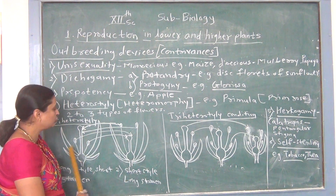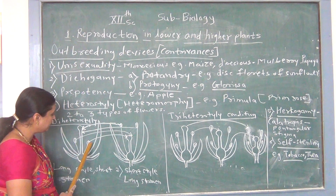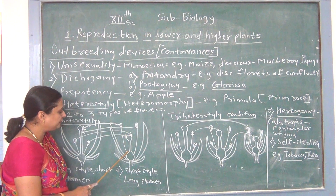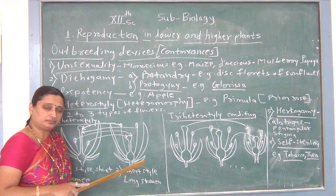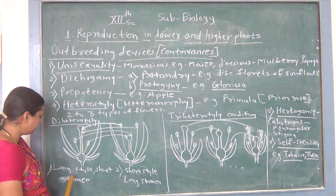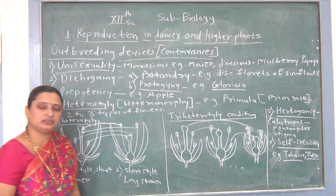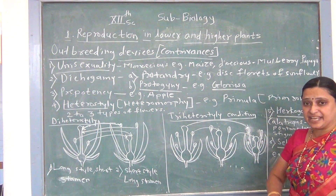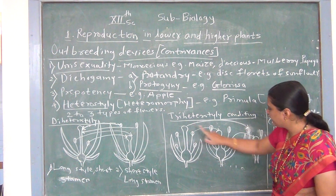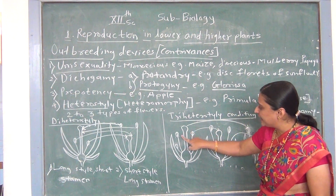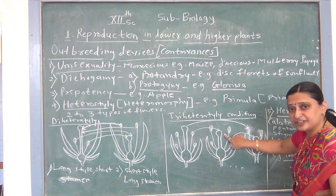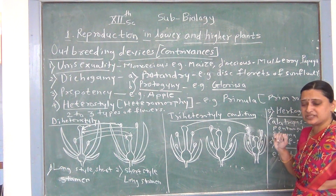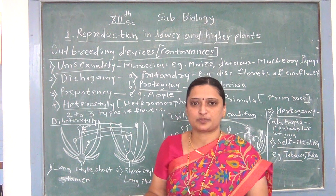In di-heterostyly, cross-pollination takes place because in the first flower the style is very long, so pollen grains of the same flower are not dusted on its own stigma. In the other flower, with short style and long stamens, the same type of anther pollen grains are not dusted on the same stigma. Therefore, both conditions — long style with short stamen and short style with long stamen — prevent self-pollination and increase cross-pollination. In tri-heterostyly, there are long style, medium style, and short style conditions, each with different stamen lengths, further preventing self-pollination and promoting cross-pollination.